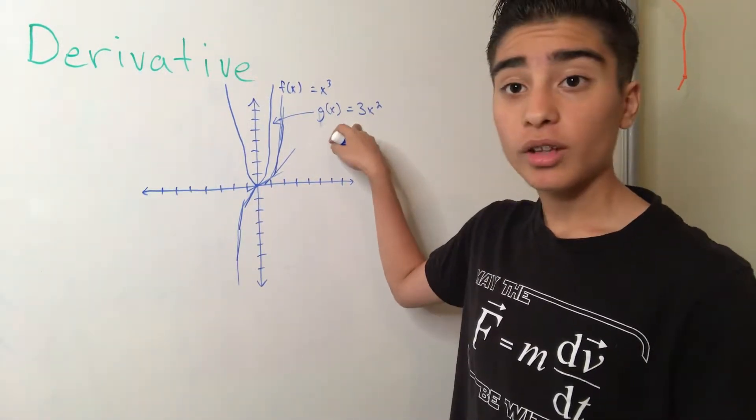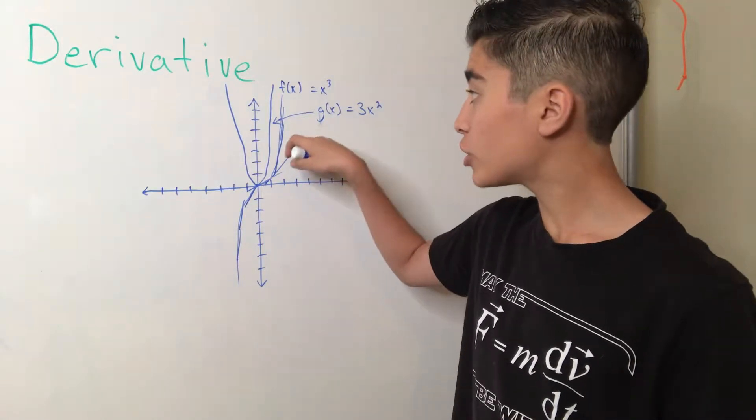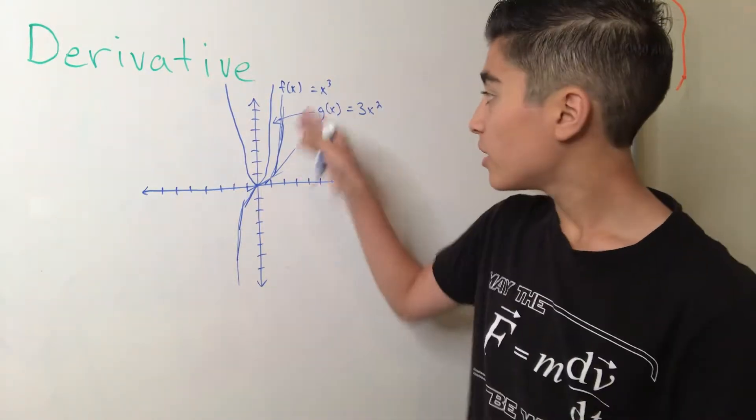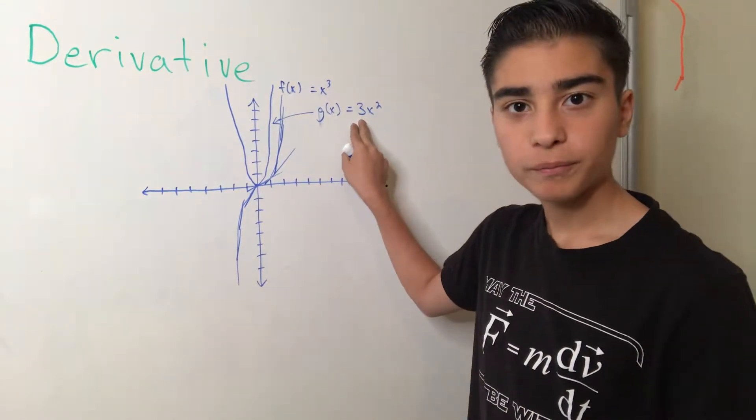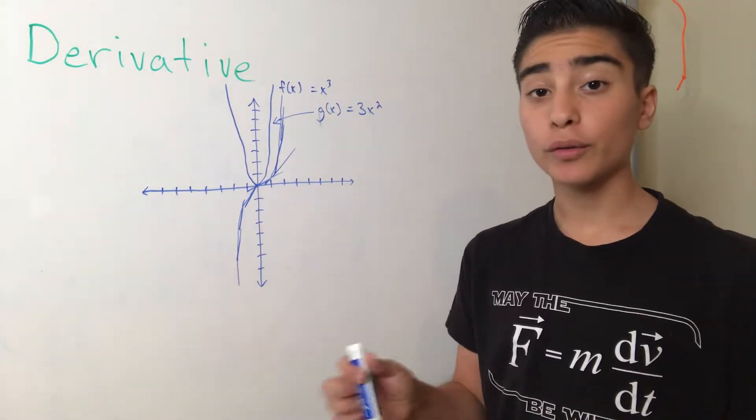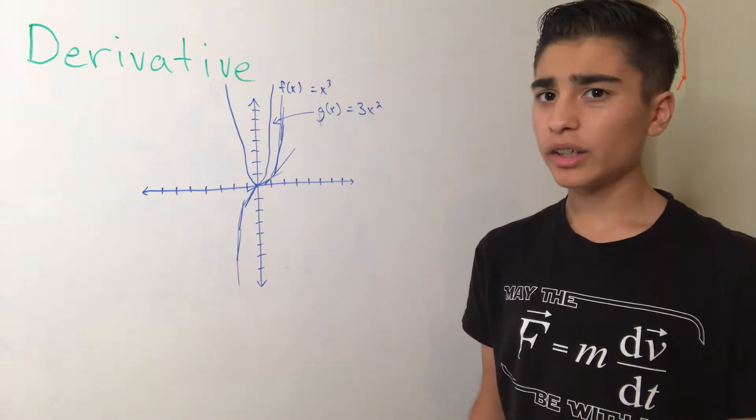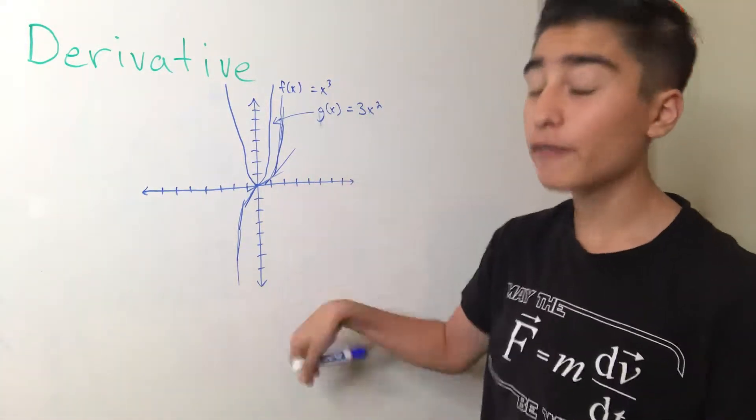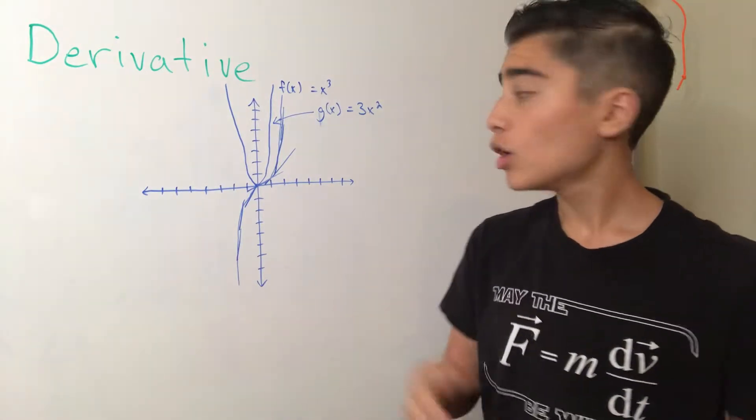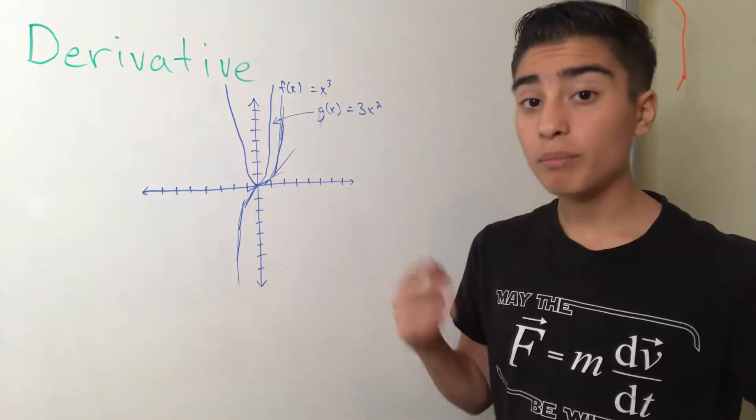So, we can say that the derivative of f of x is equal to 3x squared. Now, if we wanted to take a derivative of a function quickly, it's pretty inefficient to draw every single tangent line on every single point of a graph. So, we have a shortcut. It's called the power rule.